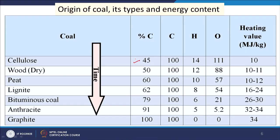With increasing rank of coal, carbon content increases. This is shown from cellulose to graphite — graphite is 100% carbon and anthracite is 91%. Hydrogen and oxygen gradually decrease as you go from cellulose to anthracite, and as a result the heating value increases. For energy production we prefer coal with high heating value, so prices will also differ for different types of coal.